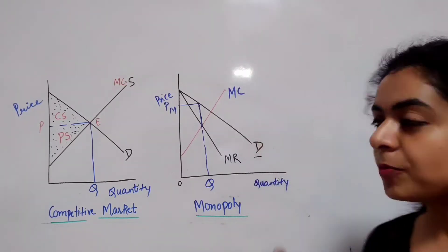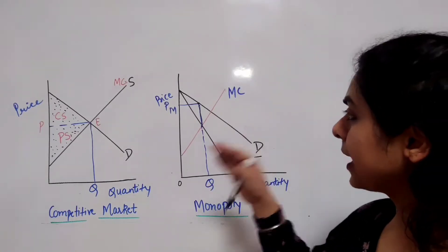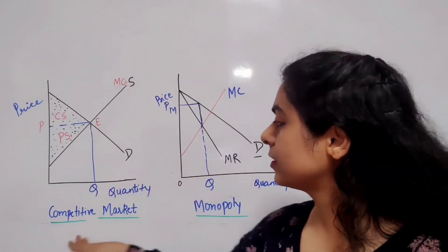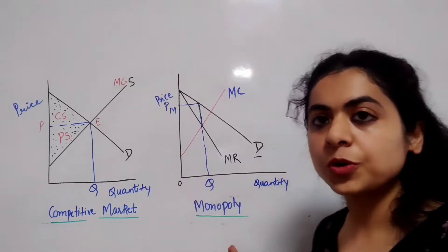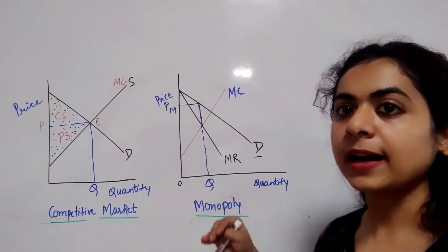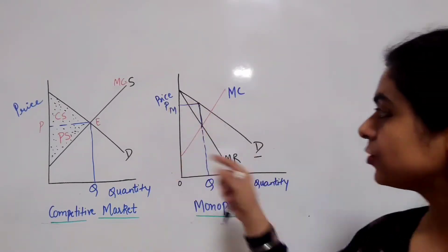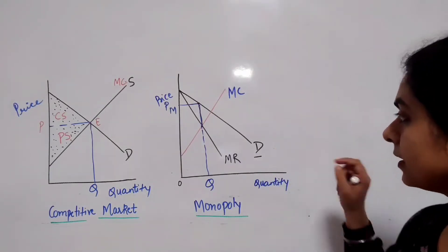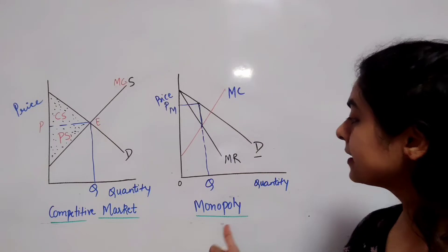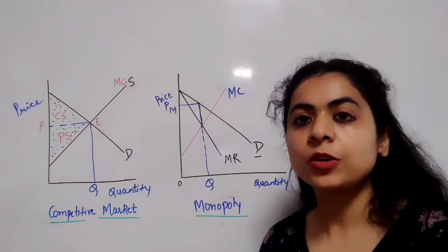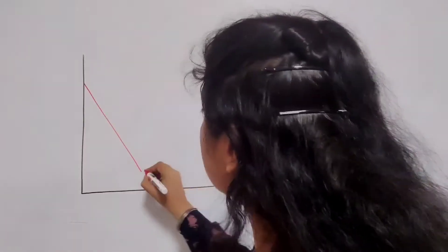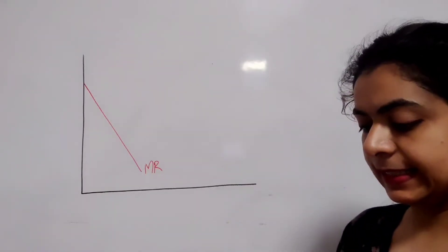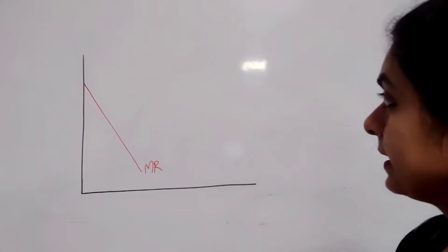For a monopolist, the price charged is in fact greater than in a competitive market and output produced is less. If we put these two pictures together in one frame, we can see how the price determined in the case of monopoly leads to a loss of economic efficiency. The marginal revenue curve for a monopolist and this one is the demand curve.